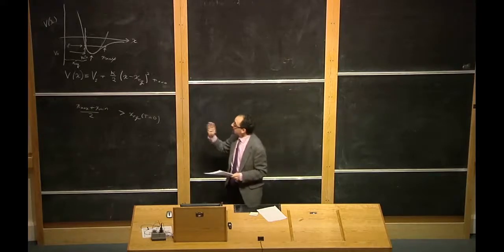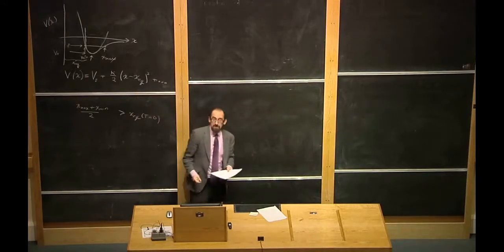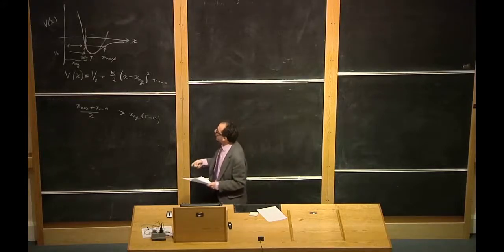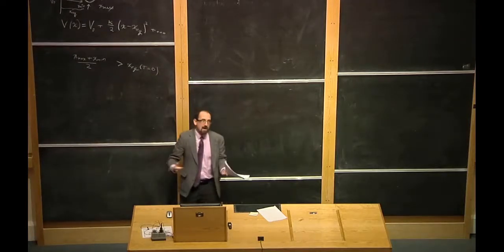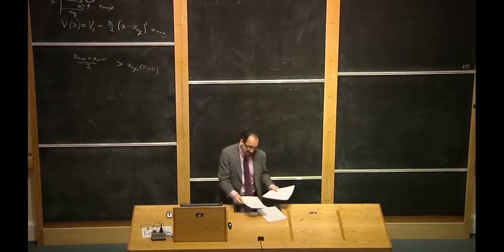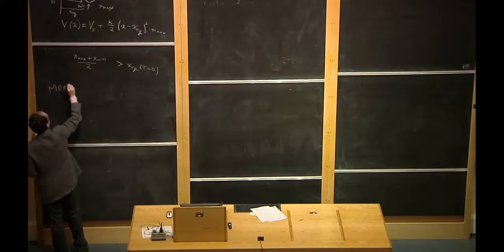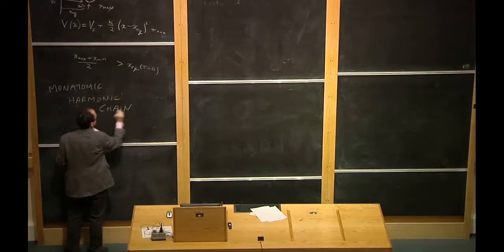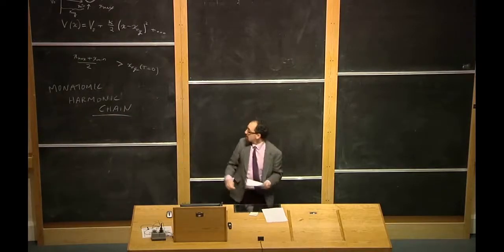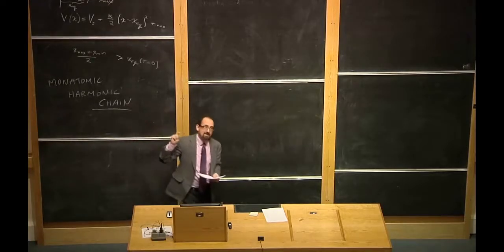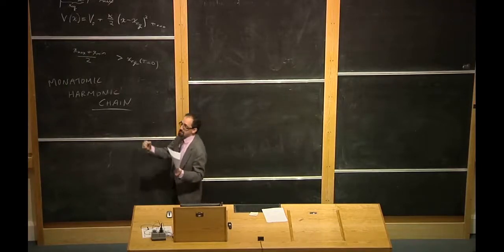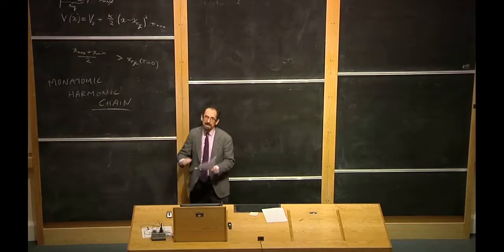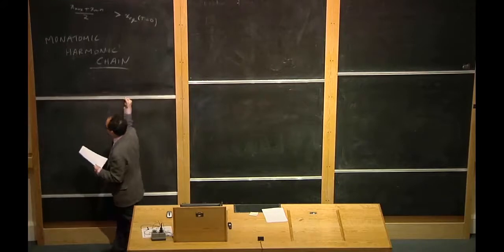As long as we're not considering things like thermal expansion, it's fine to truncate our potential at quadratic order, giving us a pure Hooke's Law type spring between our atoms. So what we're going to do for the rest of the lecture is take a very simple — actually extremely simple — model of atomic vibration, known as the monatomic harmonic chain, which is potentially the most important model we're going to study all year, not only because it shows up on the final exams very frequently.